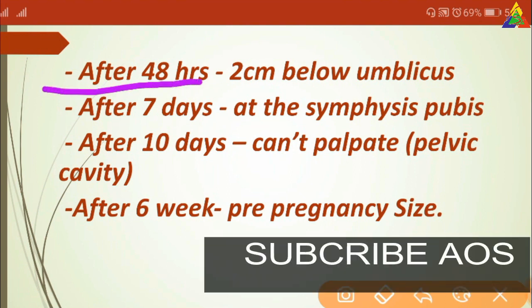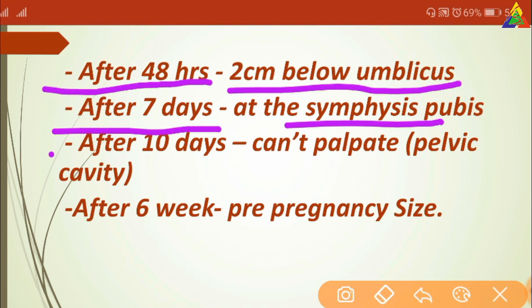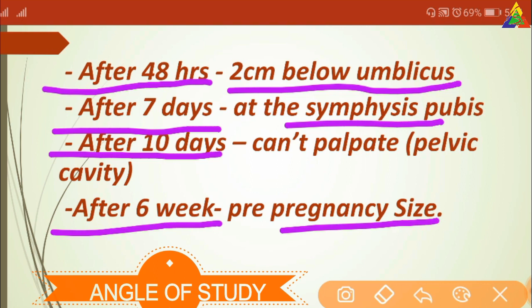After 48 hours postpartum, the fundal height should be two centimeters below the umbilicus. Around seven days, we expect the fundal height to be at the symphysis pubis, and then the uterus starts to go back into the pelvic cavity so you can no longer palpate the fundus after 10 days. After 6 weeks, it should be back at its pre-pregnancy size.